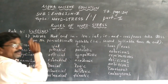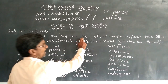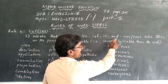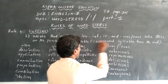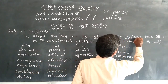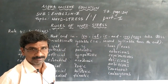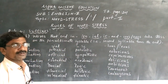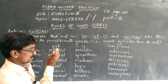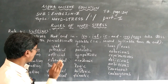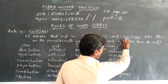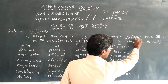These suffixes — -ion, -ial, -ic, -ious, and -eous — are always added to the end of your word. All these are suffixes; suffixes are always added at the end of the word.